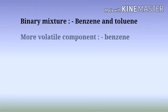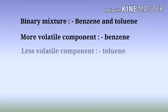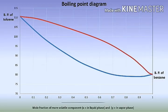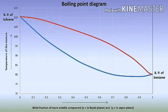Now consider a binary mixture of benzene and toluene, where benzene is the more volatile component and toluene is the less volatile component. In the Boiling Point Diagram, the composition of the mixture is plotted on the x-axis in terms of mole fraction of the more volatile component benzene — X in the liquid phase and Y in the vapour phase. Temperature is plotted on the y-axis.